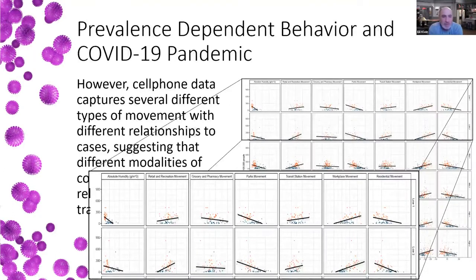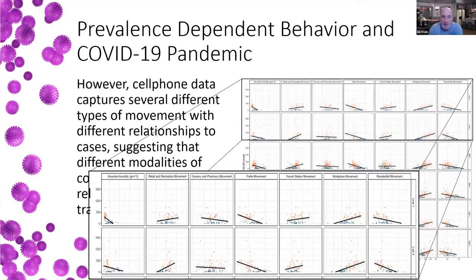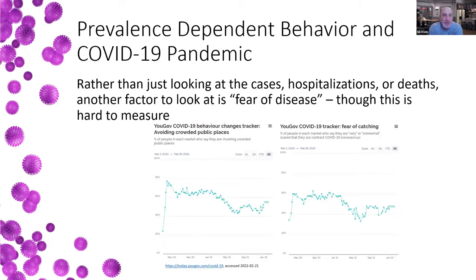When you put all of that together, you do see some of these relations really start to come out strong. There was certainly a relationship to workplace movement — as people started to go back to work, we see a relationship to cases. There's also a relationship to humidity, which we believe drives some of that seasonality. However, what cell phone data isn't telling us is what people are doing when they get to those places. If everyone is moving about and wearing masks, that's a different situation than if people are moving about the way they were prior to the pandemic.